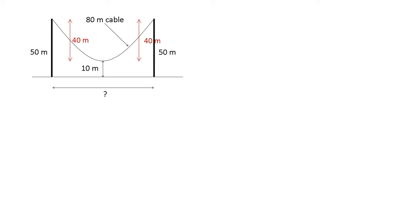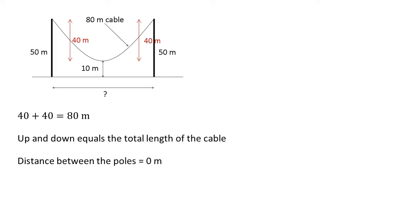The total distance travelled by the cable vertically is 40 plus 40 which is 80 metres. The up and down of the cable equals the total length of the cable, which means that there isn't any length left to travel horizontally. Hence the distance between the poles must be 0 metres. In other words, the poles are stood together.